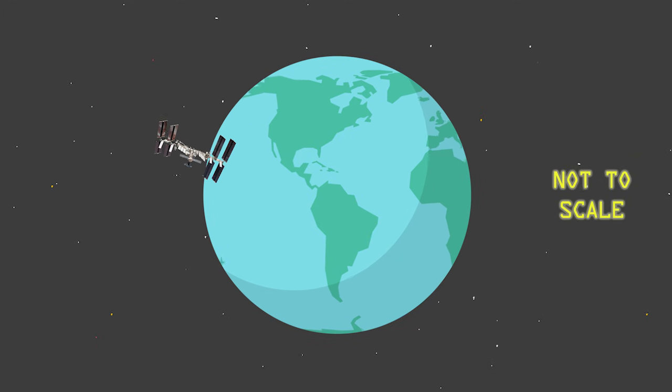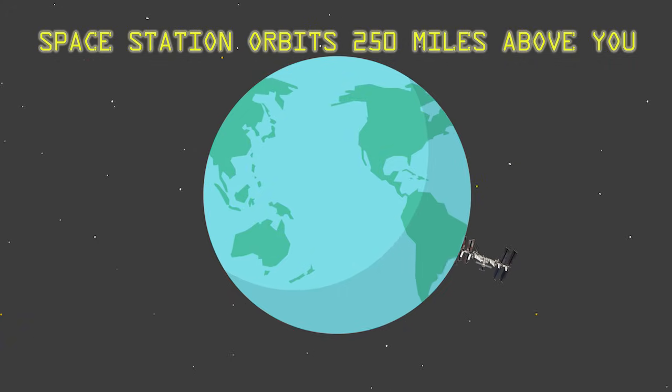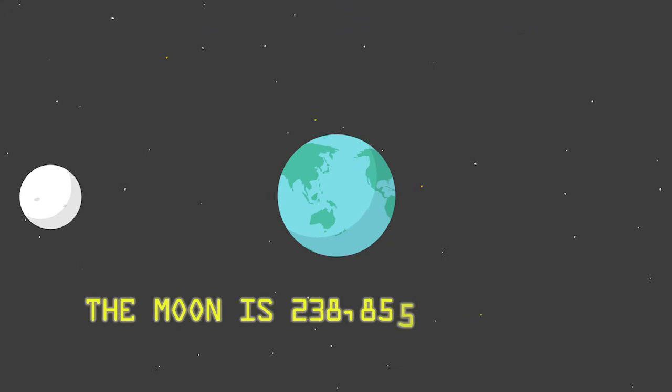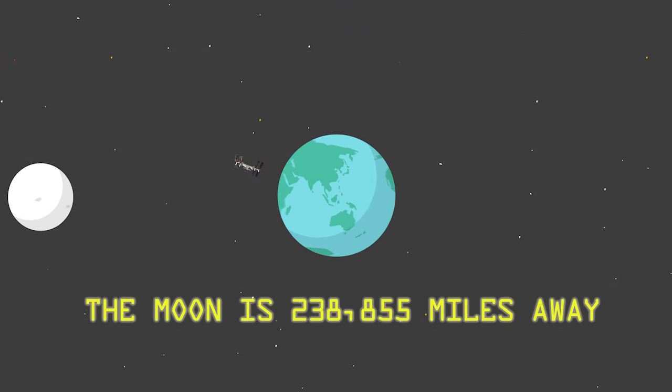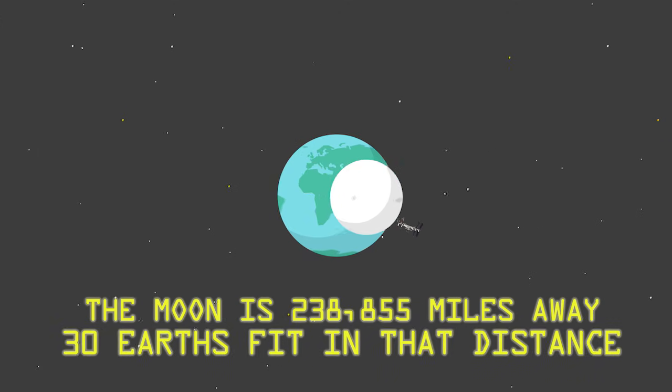But before we check out the Moon phases, let's take a look at where the Space Station is compared to where we are on Earth and where the Moon and the Sun are. On Earth, you're only about 250 miles below the station. The Moon, however, is located 238,855 miles on average from Earth. You could fit 30 Earths in that distance.